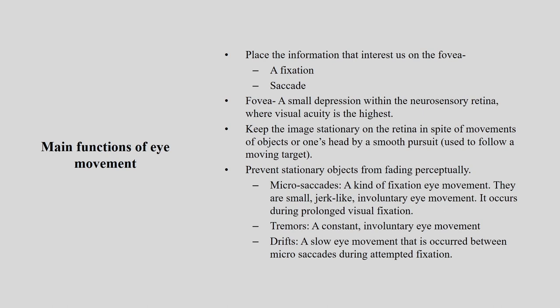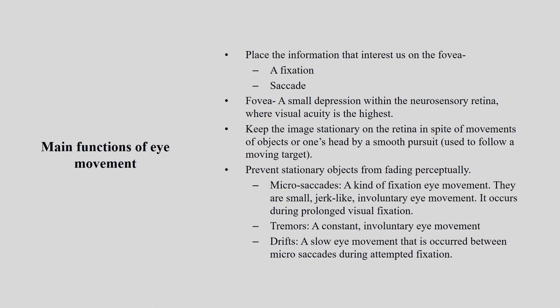Let us understand micro-saccade — a kind of fixation of eye movement. They are very small, involuntary jerking eye movements. When does it happen? When you have a prolonged duration of fixation, there is a small micro-saccade — a sudden small movement of your pupil. So you are concentrating on a particular object with a fixation for a long duration, but there is still a little jerking movement — that is micro-saccade.